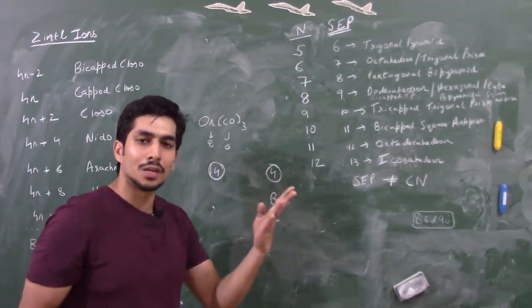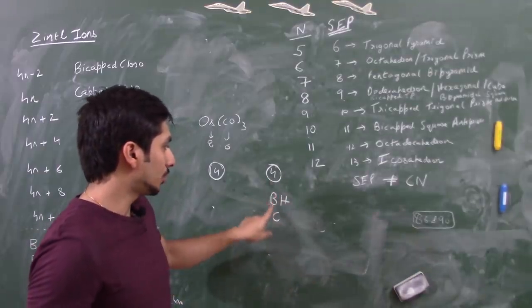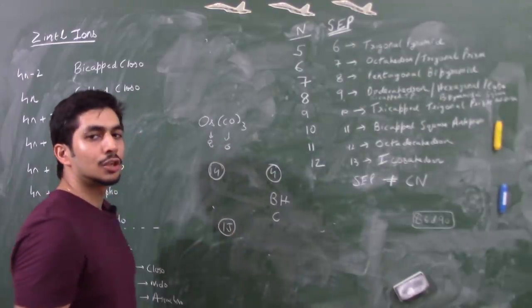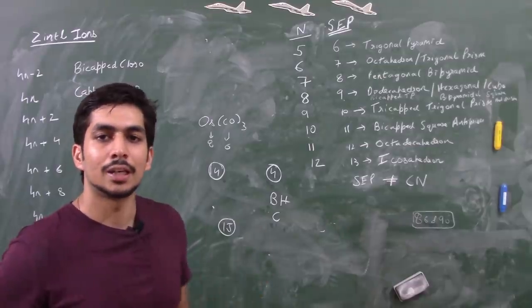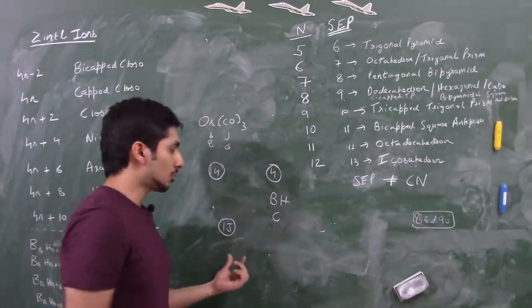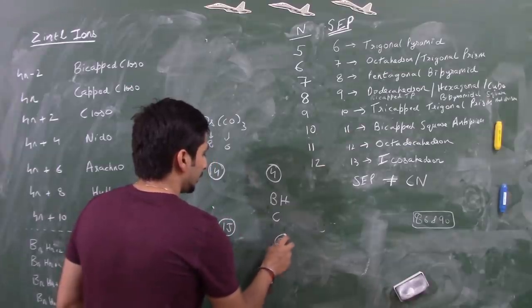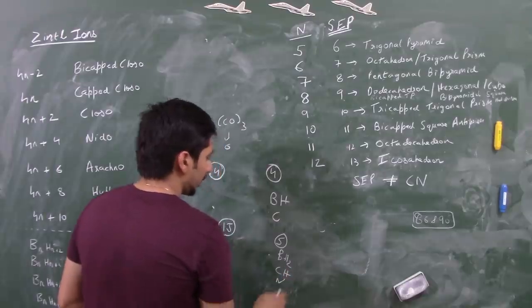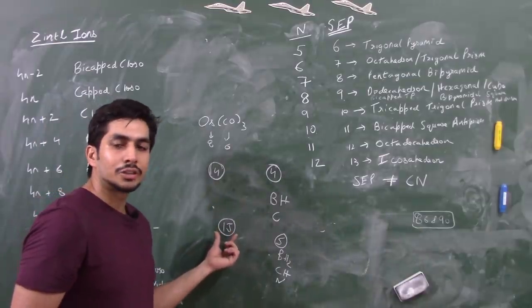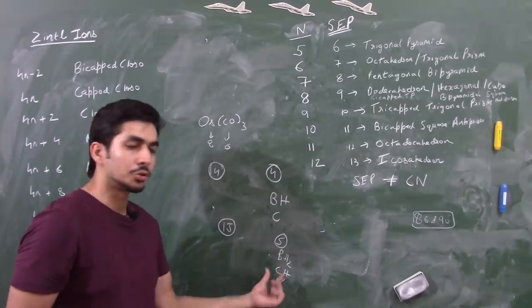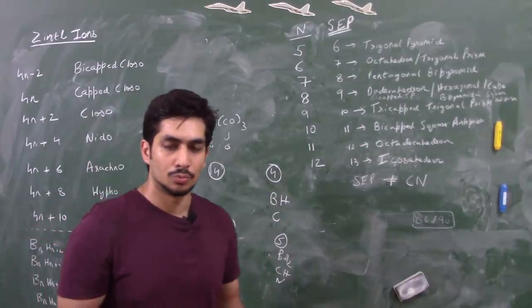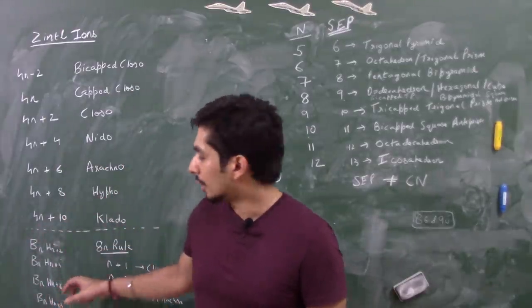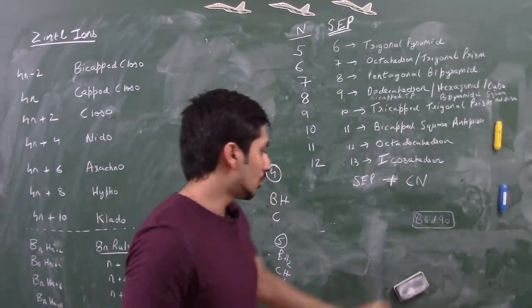If we have a 15-electron complex like nickel cyclopentadienyl, where nickel contributes 10 electrons and Cp contributes 5, subtract 10 to get 5. So it can be BH2, CH, or N fragment - since nitrogen has 5 valence electrons. You can replace that transition metal fragment with N, CH, or BH2. But I am telling you: always replace it with BH2 so we can correlate to basic boron geometries.